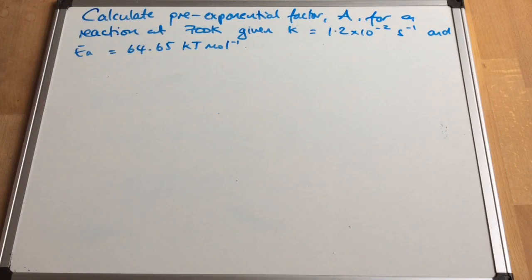So in the second calculation, we're going to calculate the pre-exponential factor A for this reaction at 700 Kelvin. And we're given the rate constant k, 1.2 times 10 to the minus 2, seconds to the minus 1. And it has an activation energy of 64.65 kilojoules per mole.